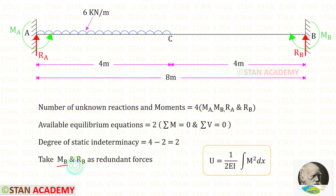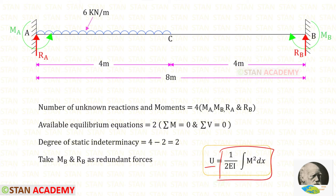To find Mb and Rb, we are going to use the strain energy method. We know the formula to find the strain energy: U is equal to 1 upon 2EI into the integration of M squared dx. To find the moment M, we have to make sections in this beam.